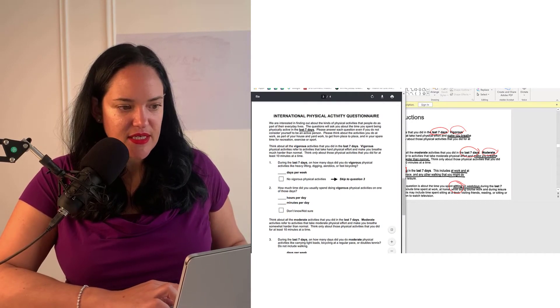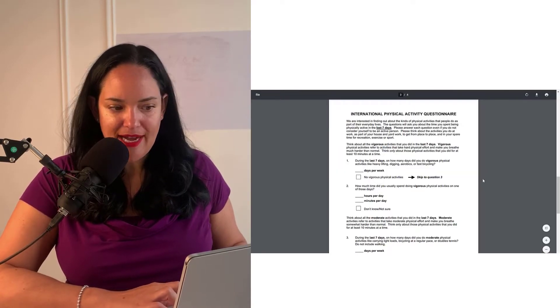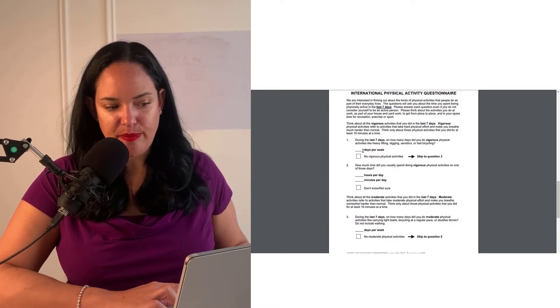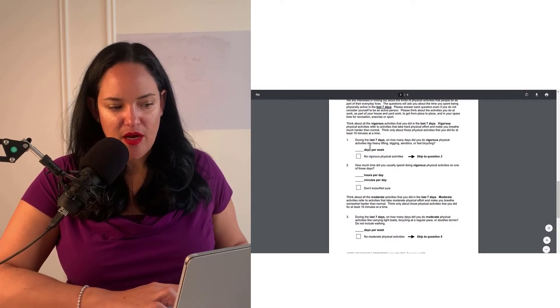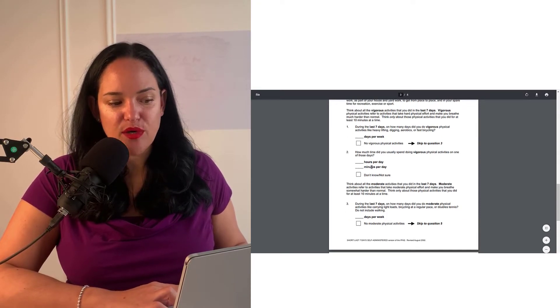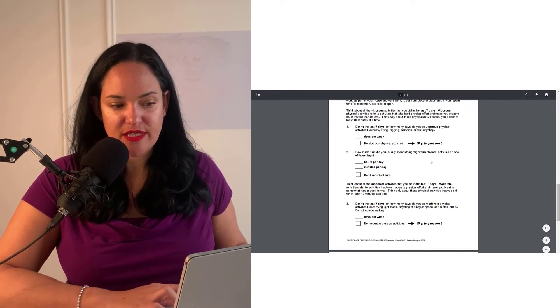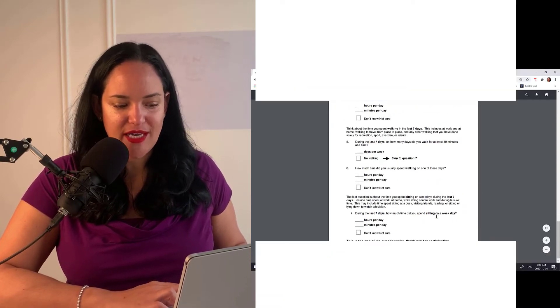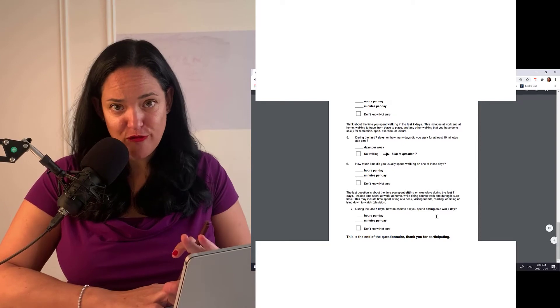So this is the IPAQ short as we talked about before. So you fill in how many days per week you did of vigorous physical activity and how many hours and minutes per day of that vigorous activity as well. How much moderate activity, like we said, how much walking and how much sitting. That's it. That's the short form.